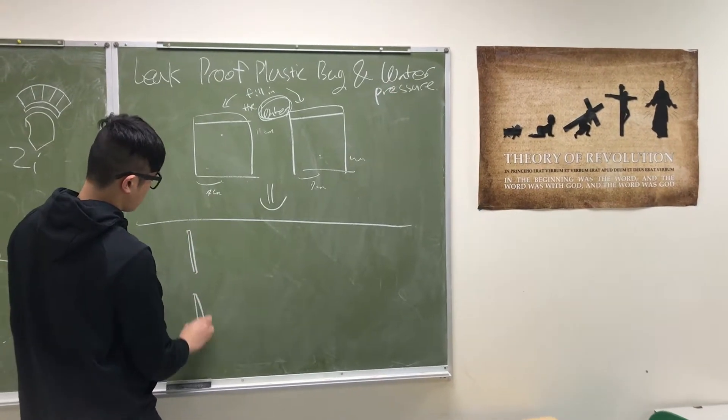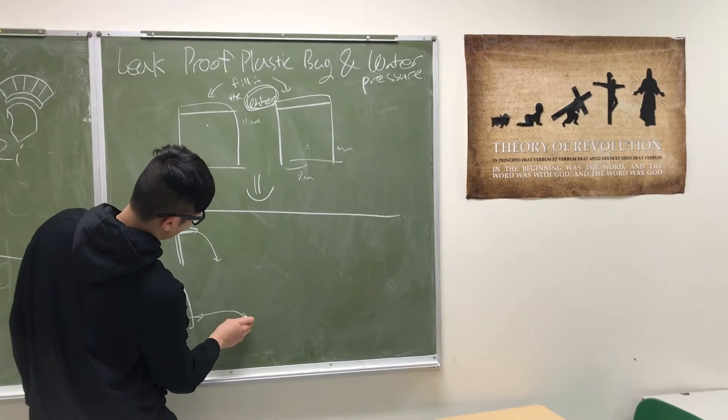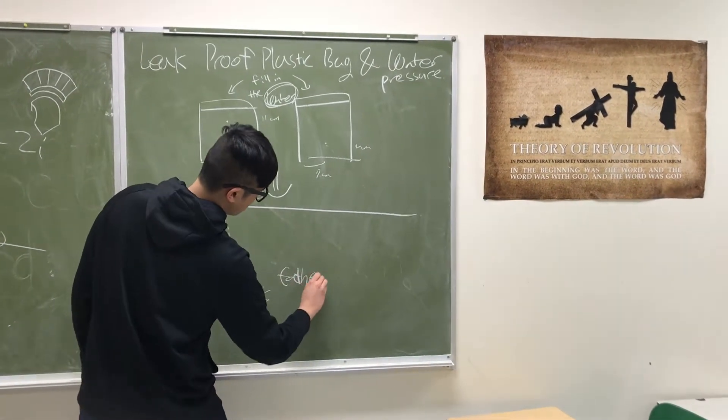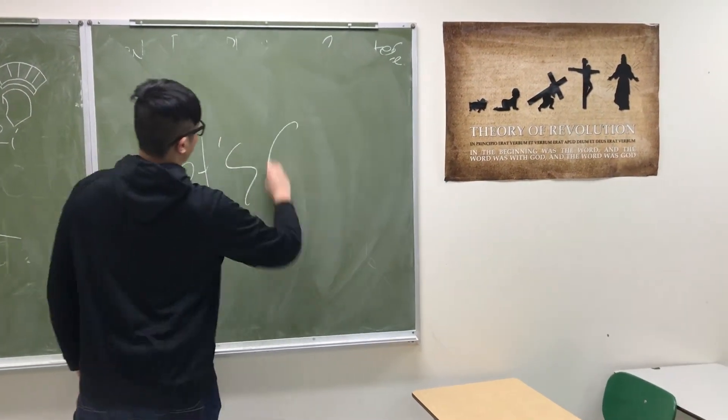According to the definition function of water pressure, since water and gravity stayed constant in this experiment, we were expecting one of the streams would go farther than the other. Then, let's go see the experiment.